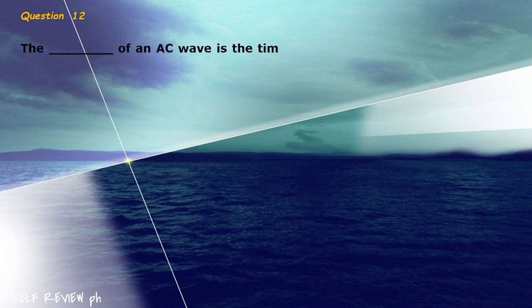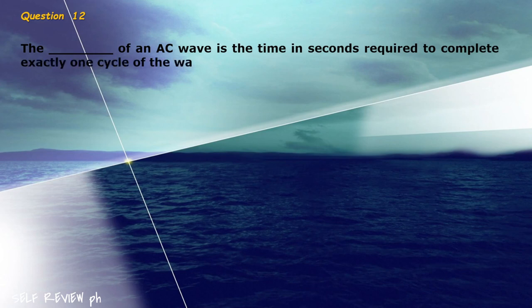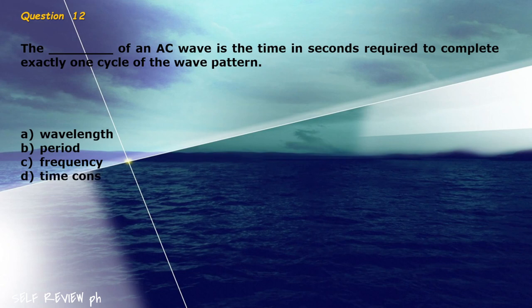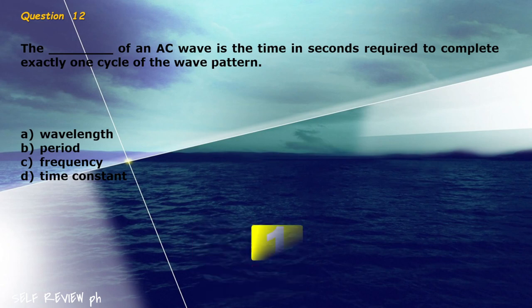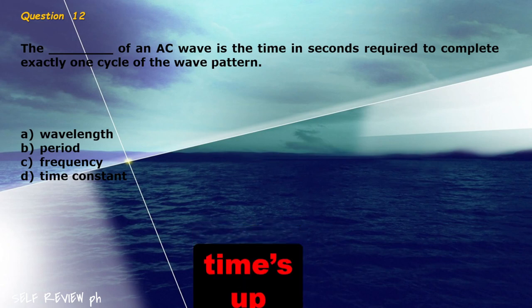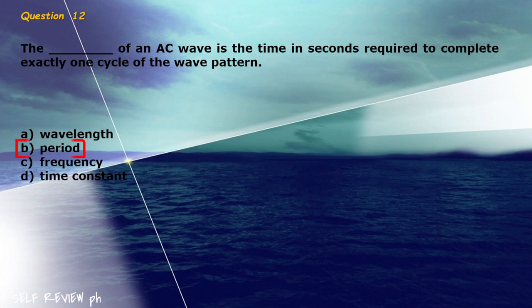Question 12: The blank of an AC wave is the time in seconds required to complete exactly one cycle of the wave pattern. A) wavelength, B) period, C) frequency, D) time constant. The correct answer is letter B, period.